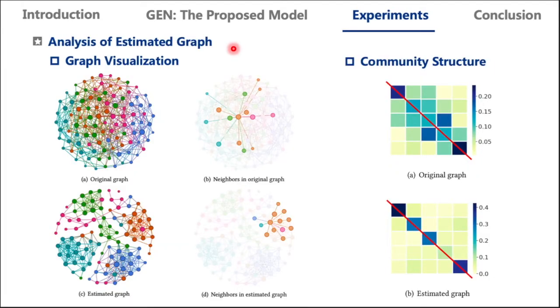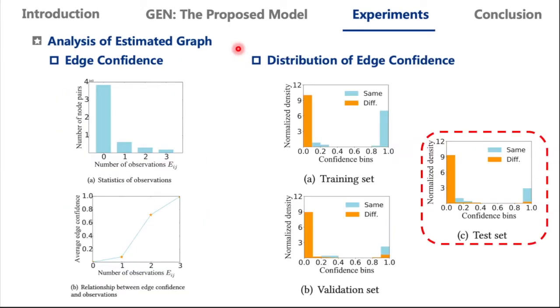Then we aim at understanding the mechanism of GEN and the properties of estimated graph. We perform studies on a synthetic graph using an attributed SBM. There are five communities, each with 20 nodes. We visualize the original and estimated graph, and we select one specific node to highlight the changes of its neighborhood. As shown in figures, the original graph is a bit chaotic, and there exist lots of between-community connections. After applying our GEN, the community structure of estimated graph is crisp, and we calculate the probability matrix between communities and draw them as heat maps. We observe that GEN widens the gaps between the diagonal and off-diagonal elements.